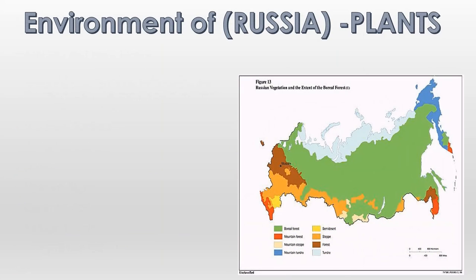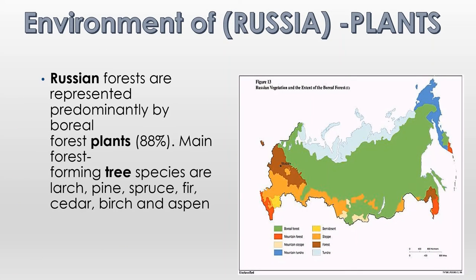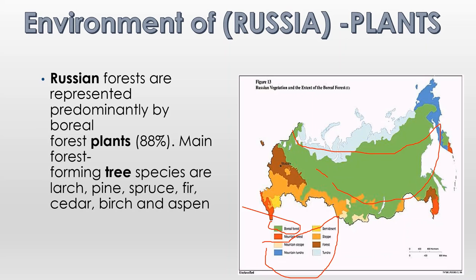The next geographic feature of Russia is plants. Russian forests are represented prominently by boreal forest plants, which make up 88% of the main forest. Farming tree species are larch, pine, spruce, fir, cedar, birch, and aspen. This is the boreal forest — it's green and very large. You can pause my video and see the map of this forest.